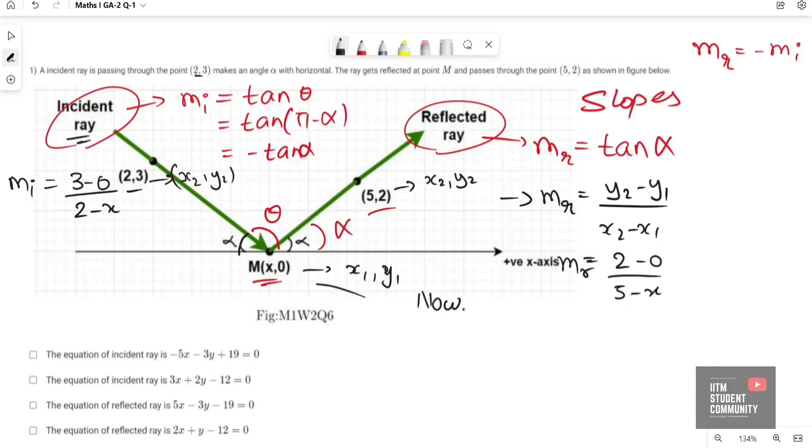Substituting we get (3 minus 0) divided by (2 minus x). Now using the equation m_R is equal to minus m_I, we get 2 divided by (5 minus x) equals minus [3 divided by (2 minus x)].